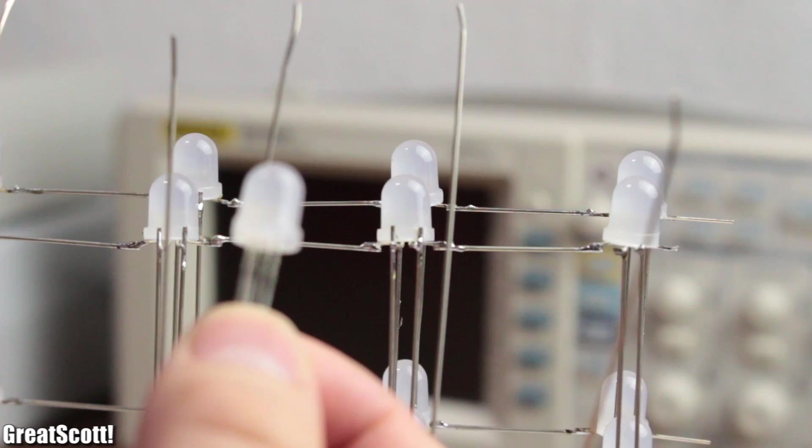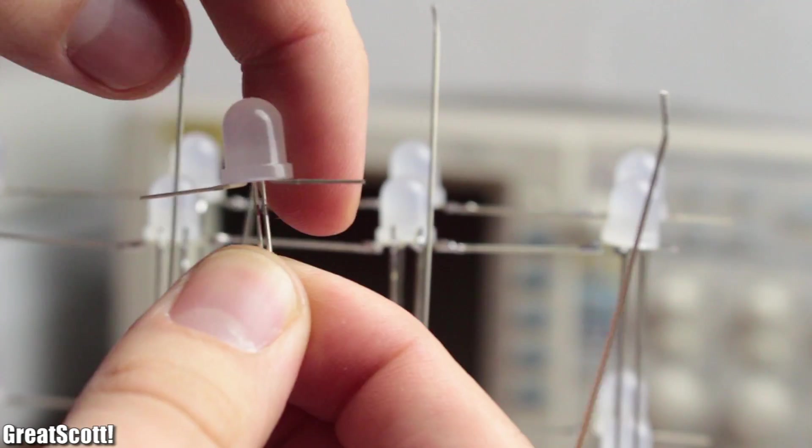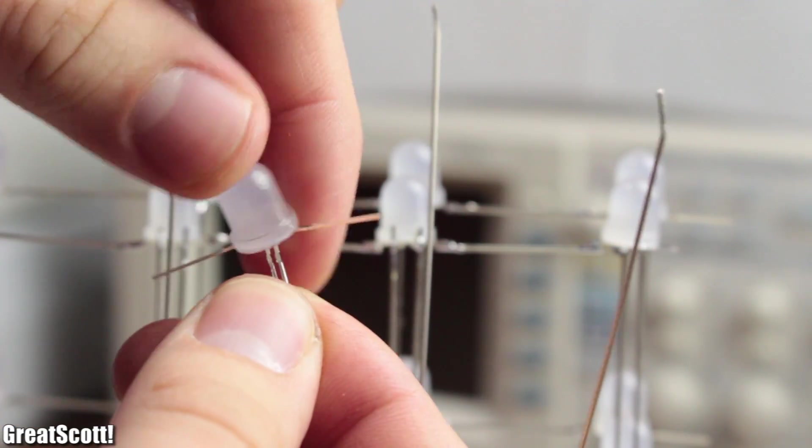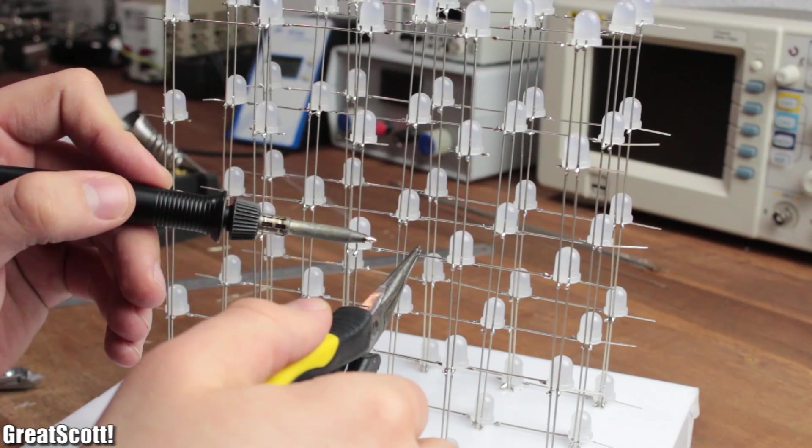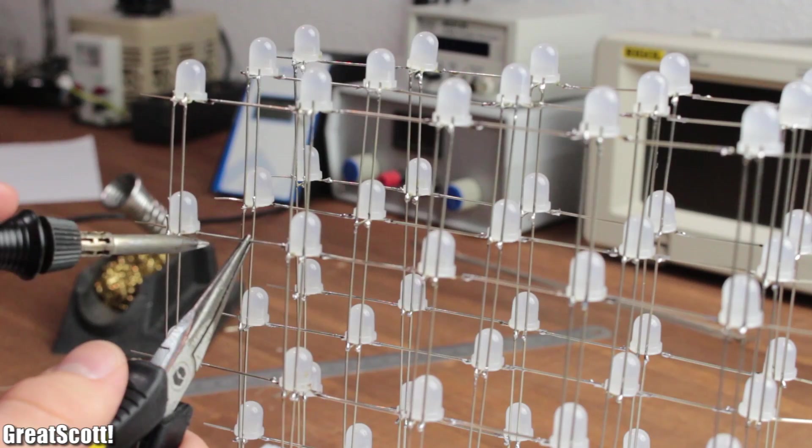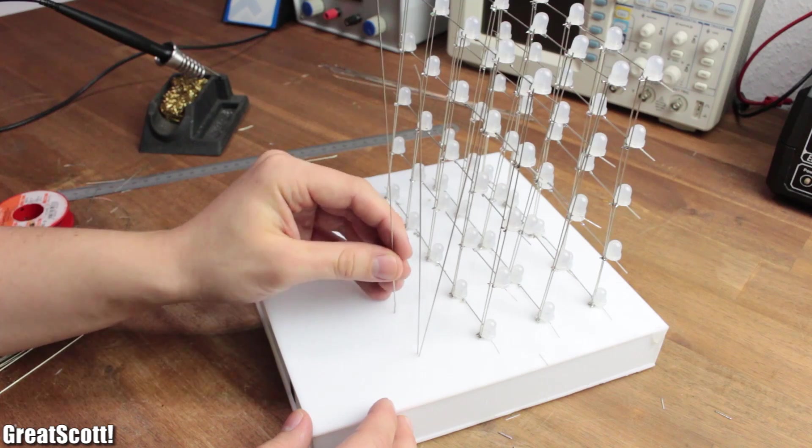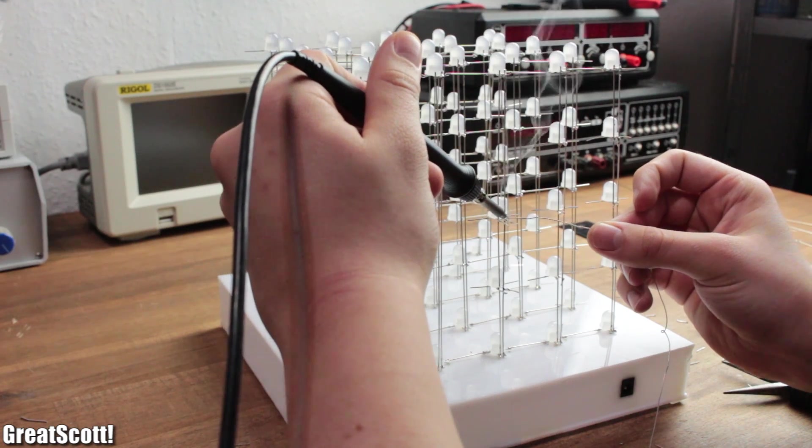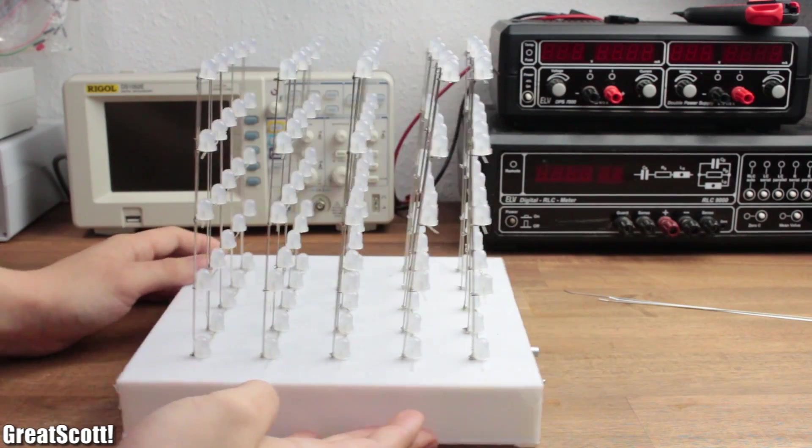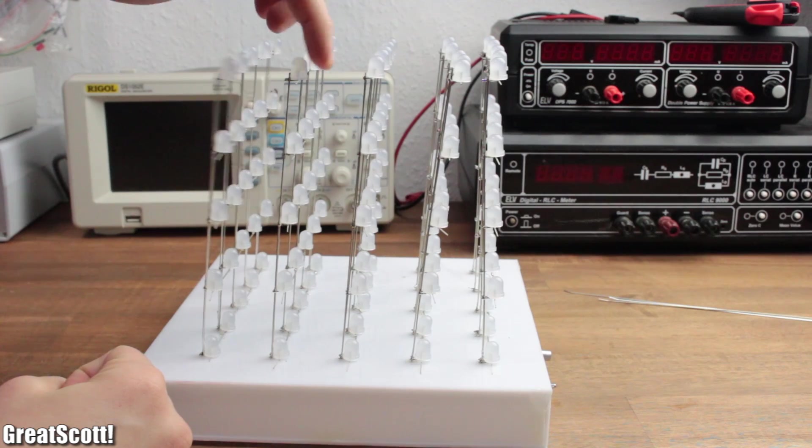Now for the third segment, you want to flip the orientation of the LEDs again. This way they face the same way as they do in the first wall. I think you should get the principle by now. And just like that I successfully created the third, fourth and fifth segment of my LED cube.